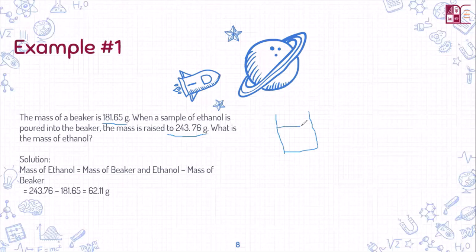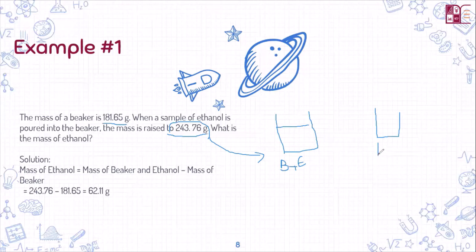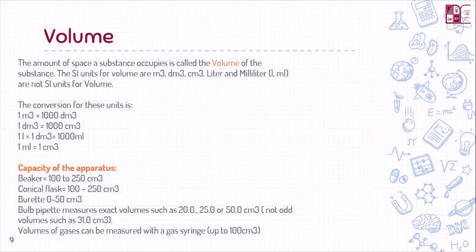So: mass of beaker + ethanol = 243.76 grams, and mass of beaker only = 181.65 grams. Subtracting both gives the mass of ethanol: 62.11 grams. It's very easy — just subtract both to get the final answer. A very simple example.